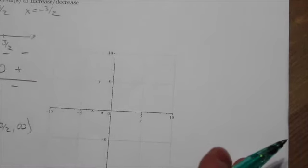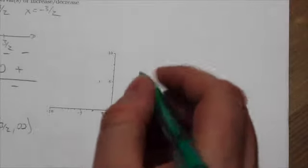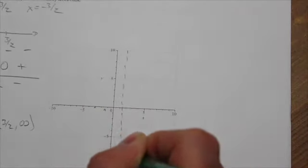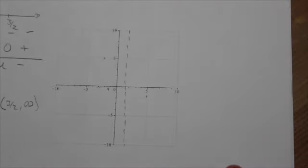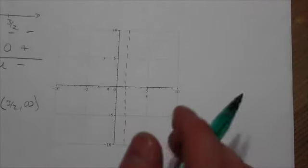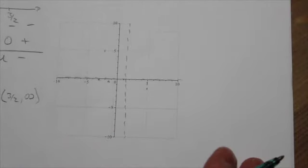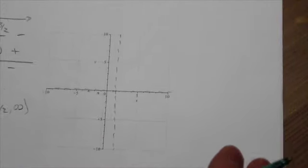We've also got a vertical asymptote at 3 halves, which is going to be over here. Positive 3 halves. I actually drew that not too bad. Looks like it's pretty close to the right spot. And we've got a horizontal asymptote along the x-axis here. Okay.